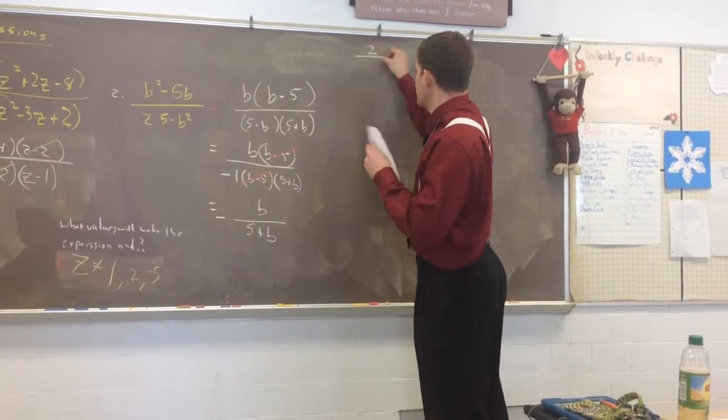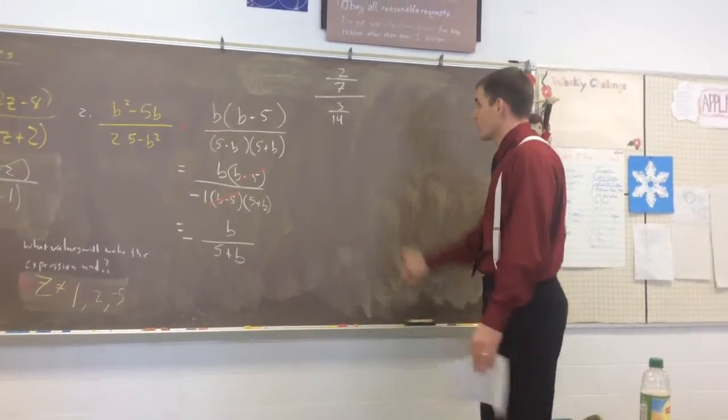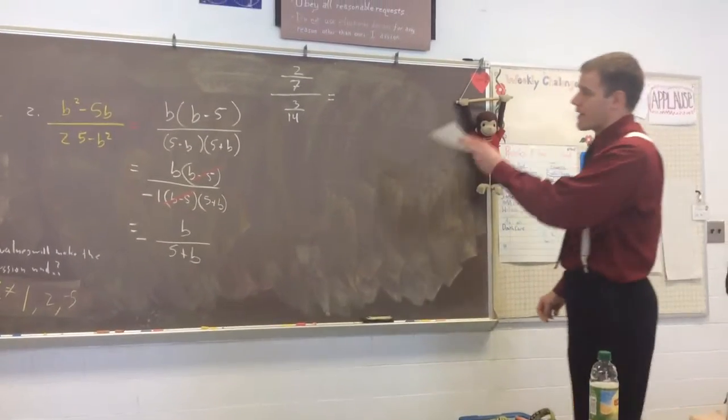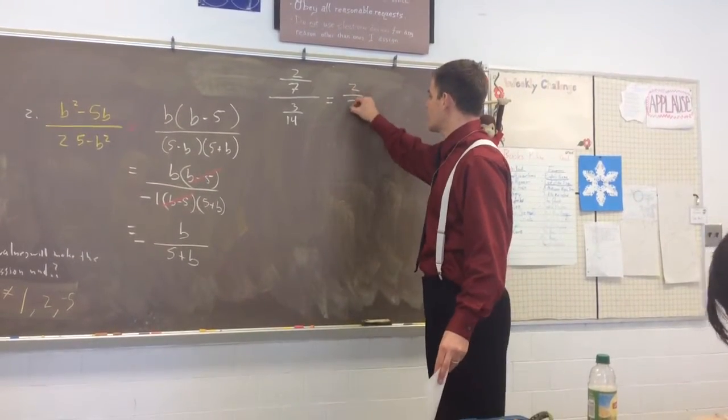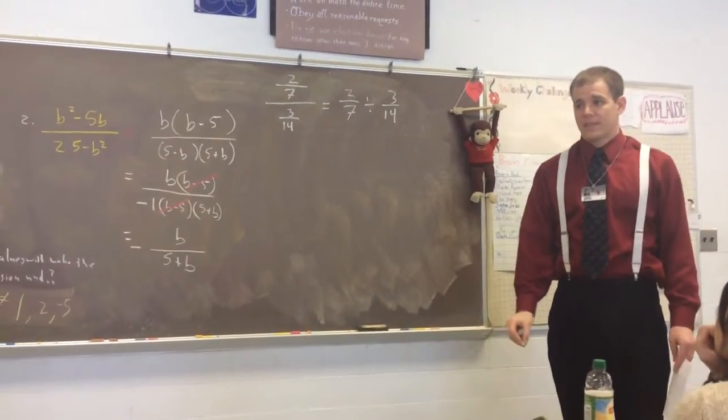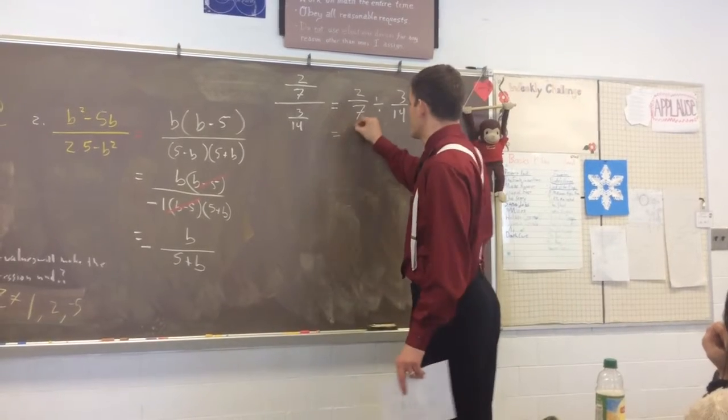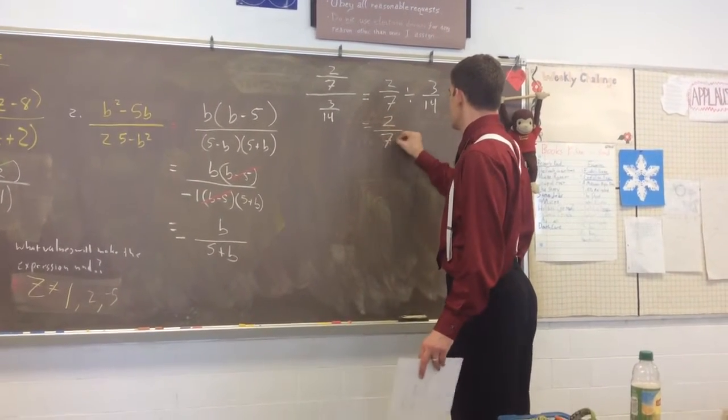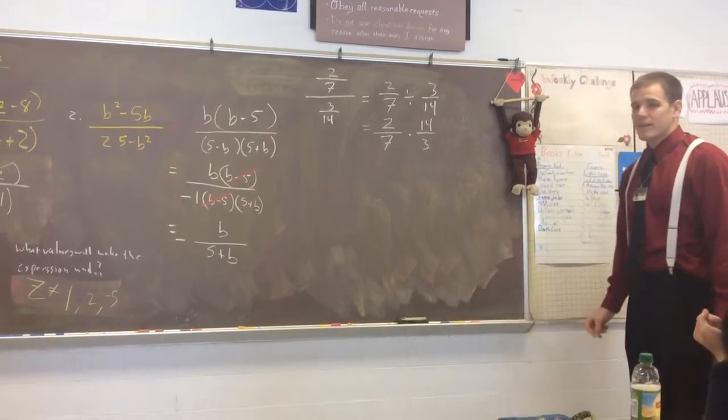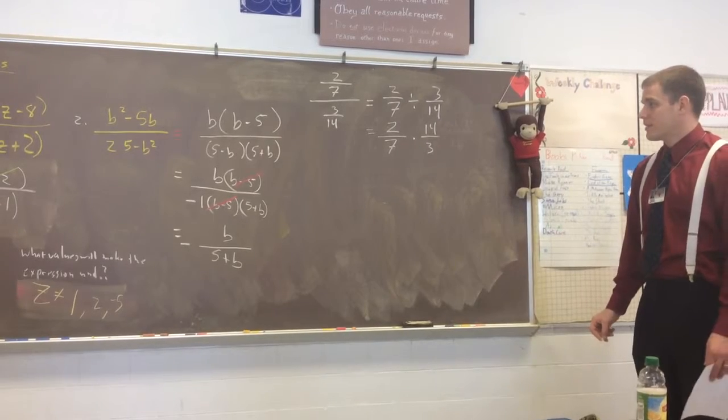If I gave you this problem, you wouldn't freak out. Because we know how we can write that. Instead of writing it as a fraction over a fraction, we can write this 2 sevenths divided by 3 over 14. Is that the same thing? Yes. How do we rewrite this to make our lives easier? Copy, dot, flip.